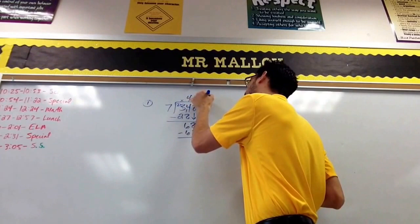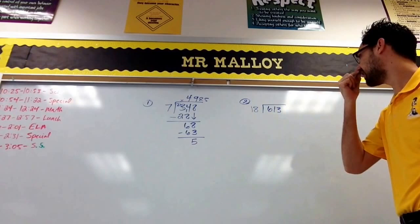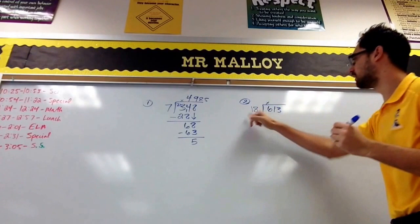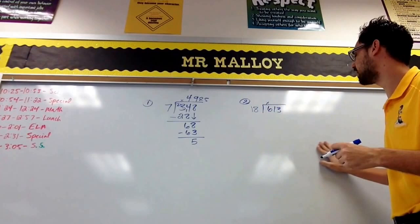Okay, and then when we have two-digit, it is the same process. So can 18 go into 6? No, so I'm going to put an X here. Can 18 go into 61? Yes. Well, how many times? This is the tricky part. You're working with bigger numbers. This is where your estimation skills really come into handy.